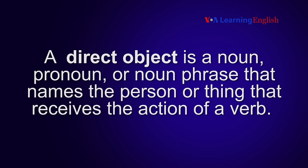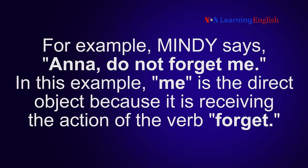A direct object is a noun, pronoun, or noun phrase that names the person or thing that receives the action of a verb. For example, Mindy says: Anna, do not forget me. In this example, 'me' is the direct object because it is receiving the action of the verb 'forget.'